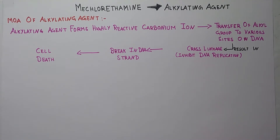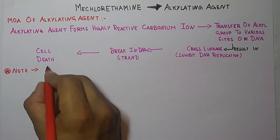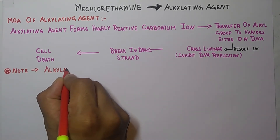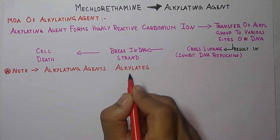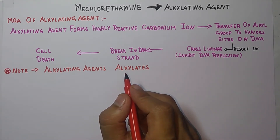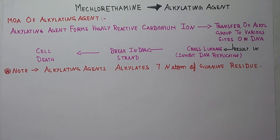Students, there is specific information about alkylating agents. They alkylate the seventh nitrogen atom of the guanine residue in DNA — they attack on the seventh position. Here we are going to provide you the structure of guanine, so you will get the idea of how they act on the guanine atom.